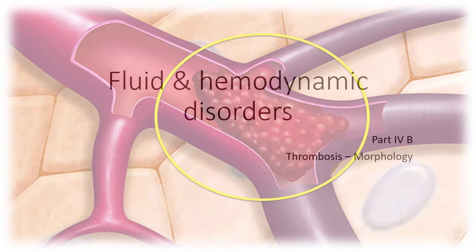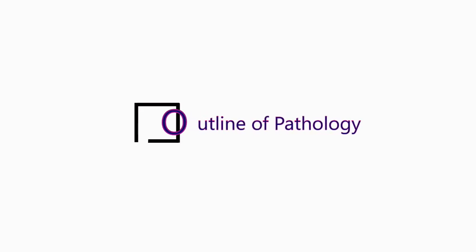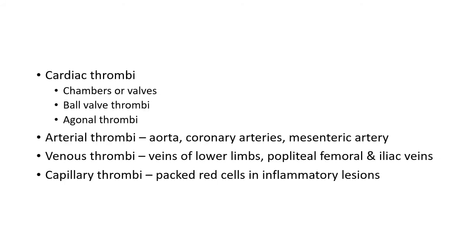Okay, now let's continue with our class on thrombosis — discussing sites of thrombi. Thrombi can occur anywhere in the circulatory system. They can occur within the heart, called cardiac thrombi, in the arteries as arterial thrombi, or in the veins as venous thrombi.